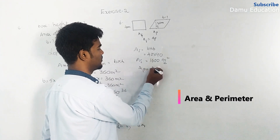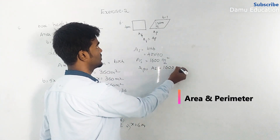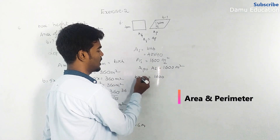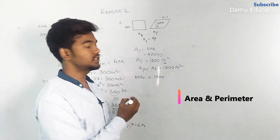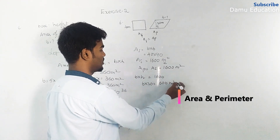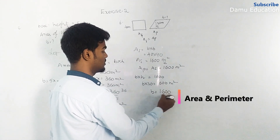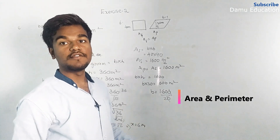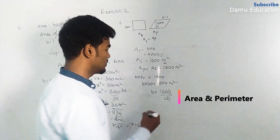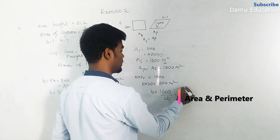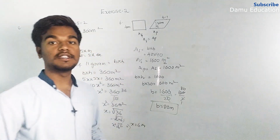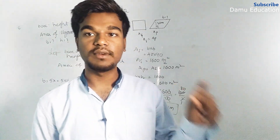Area of parallelogram equals area of square, which is 1600 square meters. Area of parallelogram equals base into height, and height is already given as 20 meters. So base into 20 equals 1600. Therefore base equals 1600 divided by 20. Cancel the zeros — 1600 by 20 becomes 160 by 2, so base equals 80 meters.